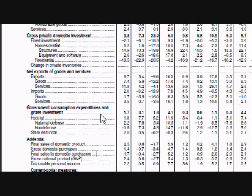The fourth category, government consumption expenditures and gross investment, is all spending and investing by federal, state, and local governments. That's the end of part one. The GDP report is continued in part two.